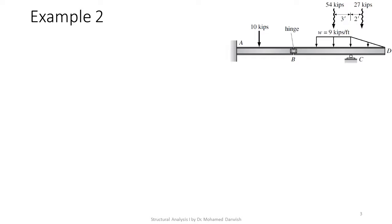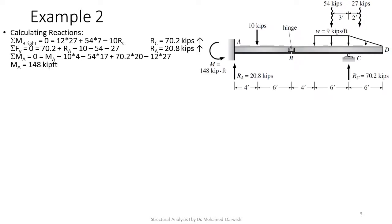Calculating reactions, we take sigma MB looking right and set it equal to zero: 12 times 27 — the resultant of the triangular load on CD — plus 54 times 7 — the resultant of the 9 kips per foot rectangular load — minus 10 times RC equals zero. Note that 10 is simply 6 plus 4. This gives RC equals 70.2 kips.